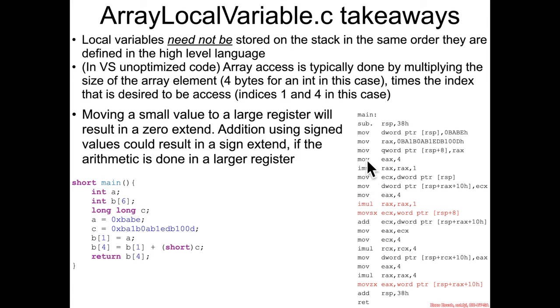So in particular, if we look at these two instructions right here, we can see that the first thing is a going into b of 1. And so moving 4 into AX and then taking 4 times 1, that essentially looks like we're accessing index 1 of the thing.